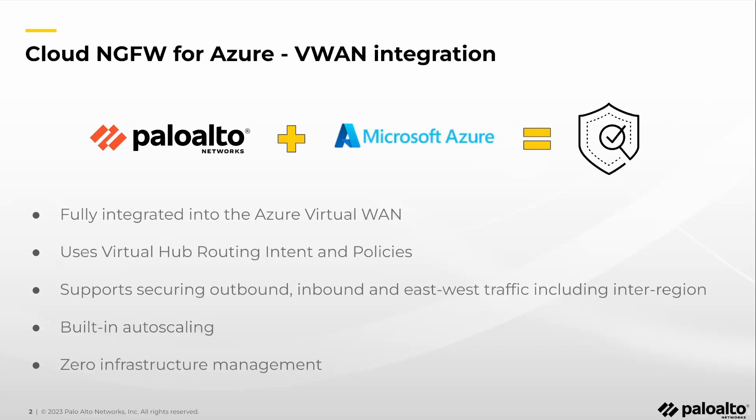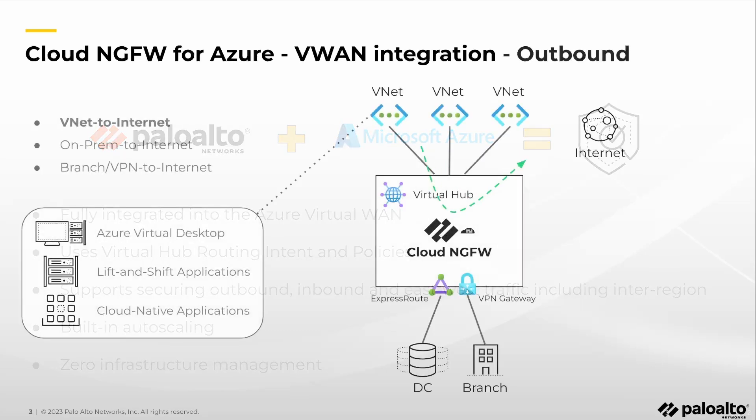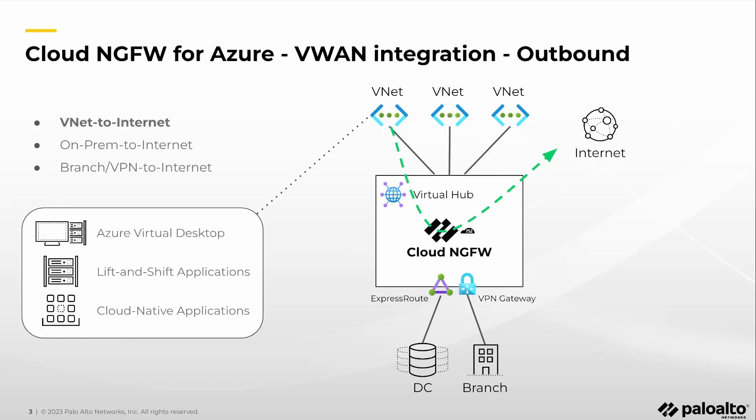Azure VWan aggregates and routes the traffic to and from VNets, on-prem data centers, and VPN connections. Inspecting and enforcing security policy right in the virtual hub is the most effective way to prevent security breaches, reduce attack surface, and maintain compliance. Cloud NGFW for Azure supports securing outbound connections originated from resources connected to the virtual hub.